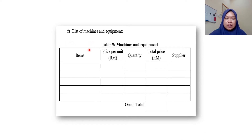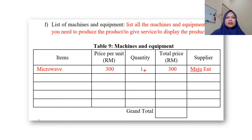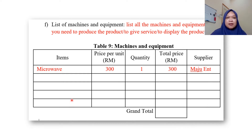We continue with F: List of Machines and Equipment. We have Table 9 — Machines and Equipment — with five columns. Draw this table and fill in all the machines and equipment that you need to produce the products, give services, or display the product. For example, if you need a microwave, the price is 300 — list the quantity, the unit price, and also the supplier. List everything, including tables, chairs, or cutlery.